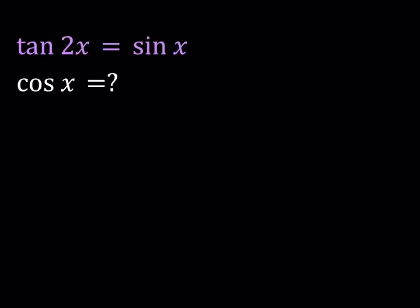It's interesting because we don't have a standard equation like sin 2x equals sin x. That would be very standard, right? Or something like sin 3x equals sin of x minus 45. Plus we're not solving for x here. We're trying to find cosine of x given that tangent of 2x is equal to sin x. Let's go ahead and take a look at this equation.